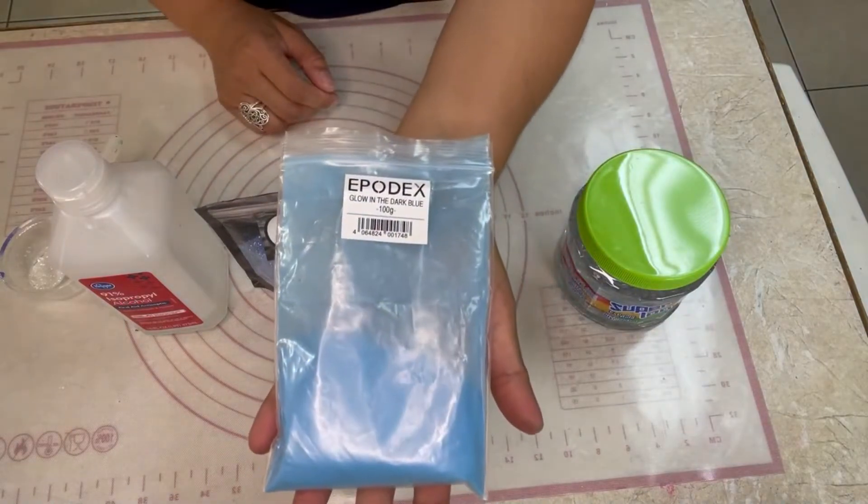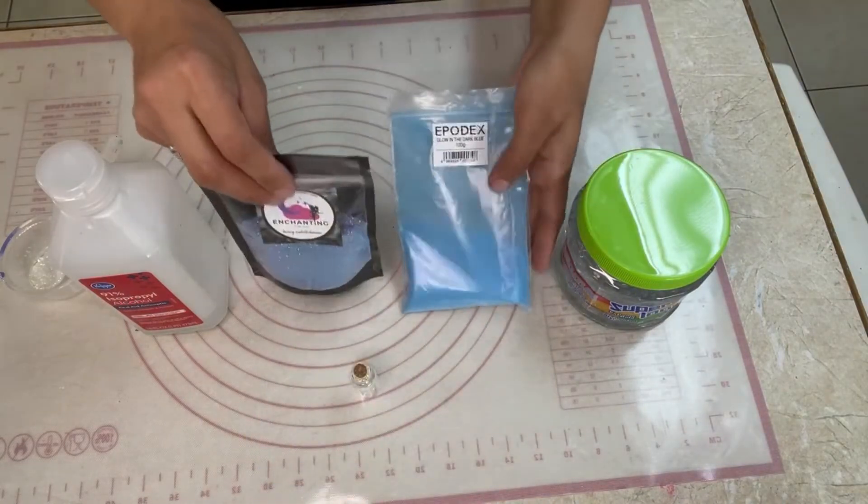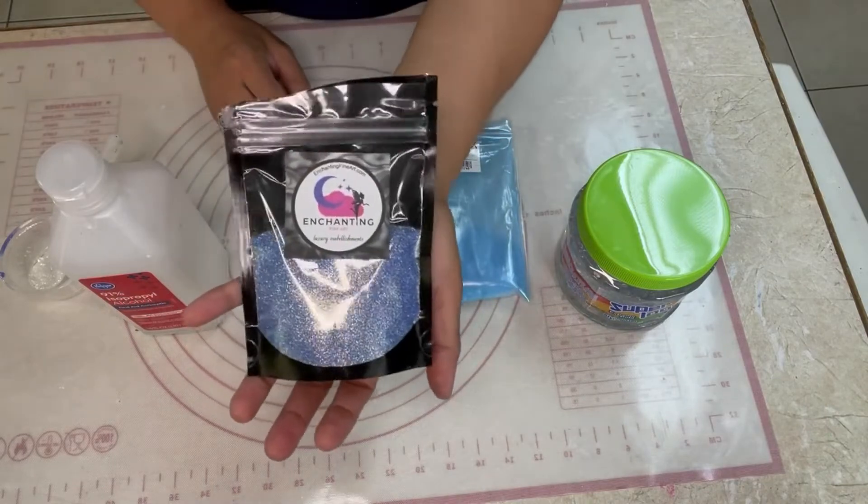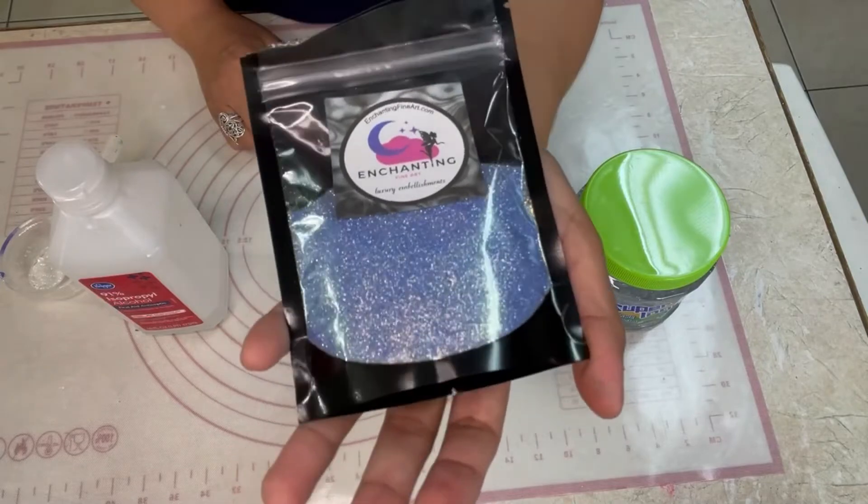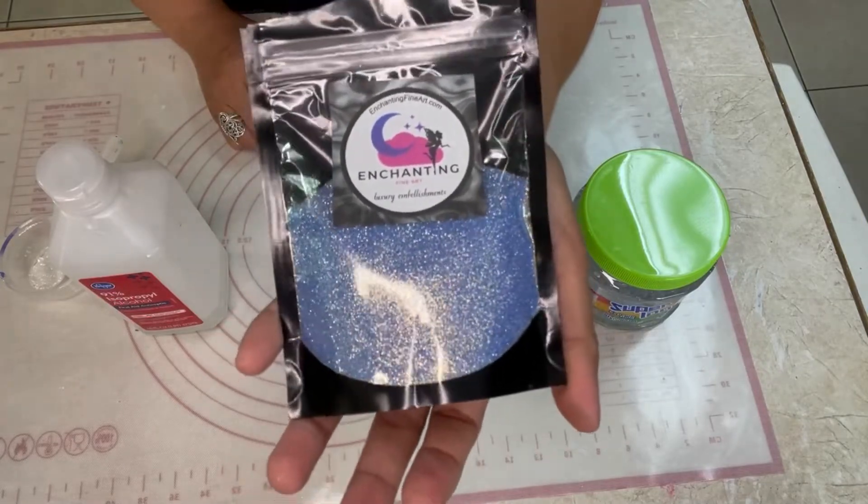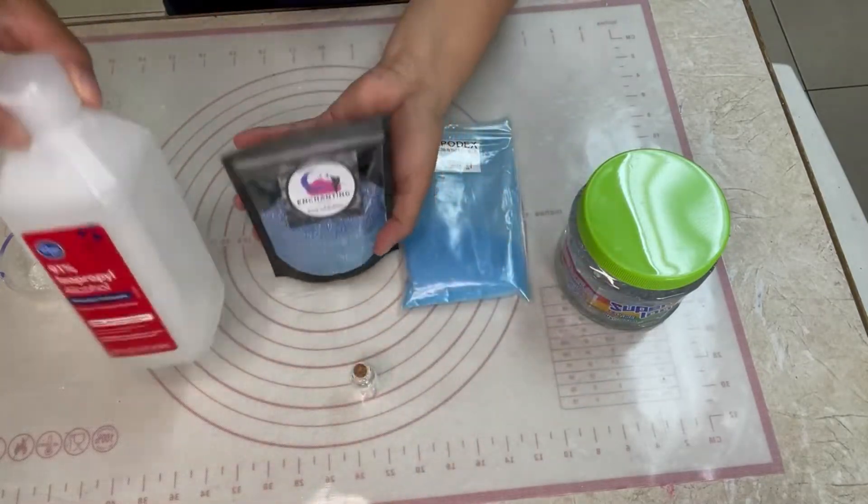This glow-in-the-dark powder from Ipodex in the blue color, and the heaven glam powder from Enchantingfineart.com. This powder looks blue, but it has a beautiful golden color shift.